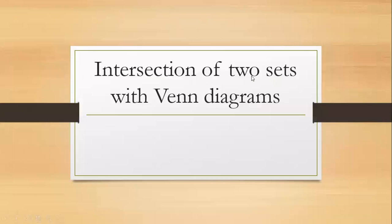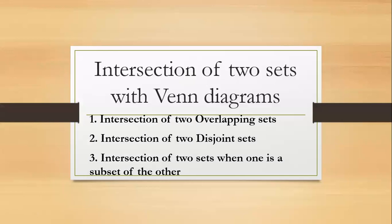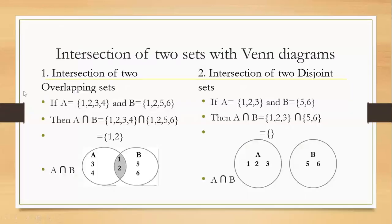Intersection of two sets with Venn diagrams. Intersection means finding the common elements. We will discuss intersection of two overlapping sets, two disjoint sets, and two sets when one is a subset of the other.